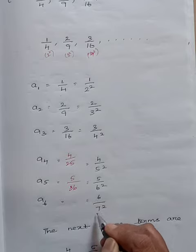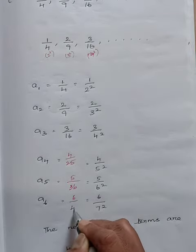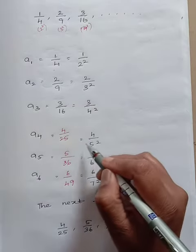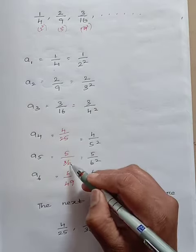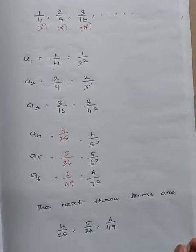And your next term is 6 by 7 square, that is 6 by 49. Therefore the next 3 terms are 4 by 25, 5 by 36, and 6 by 49. Thank you children.